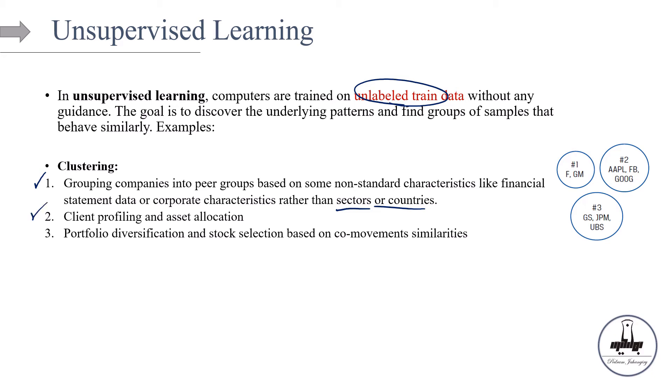Another example is that, for example, you are doing client profiling and asset allocation. Traditionally, how do we do asset allocation? We look at their income time horizon and more importantly, risk profile to just provide them with some consulting in terms of asset allocation. But what if we want to come up with some other patterns in the data? We want to profile the clients based on some other characteristics that we are not aware of. So this is another application of clustering in finance.